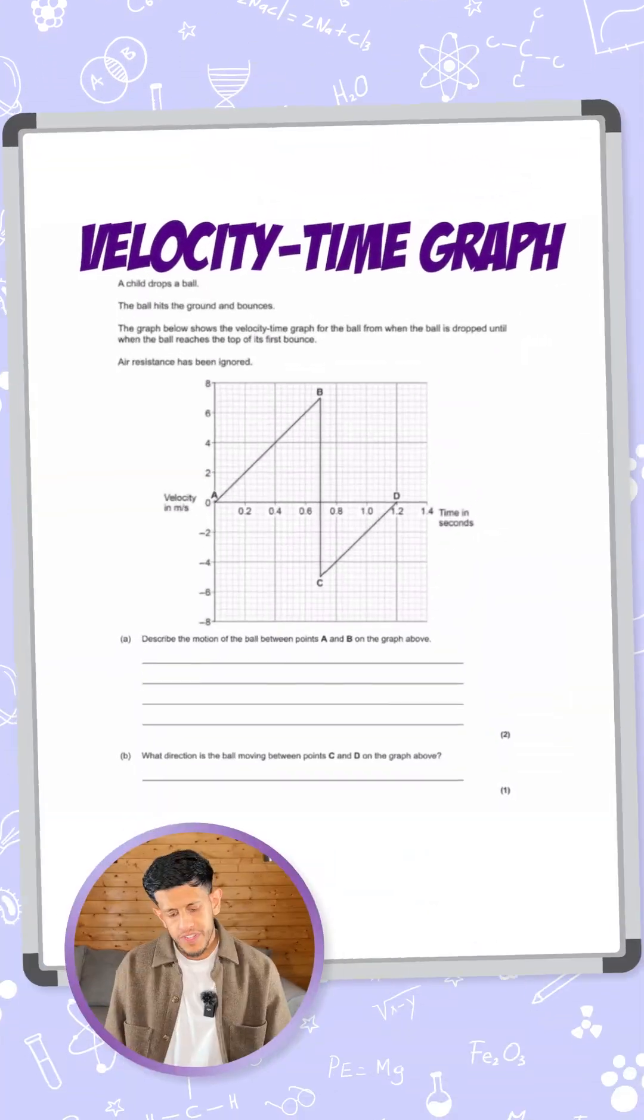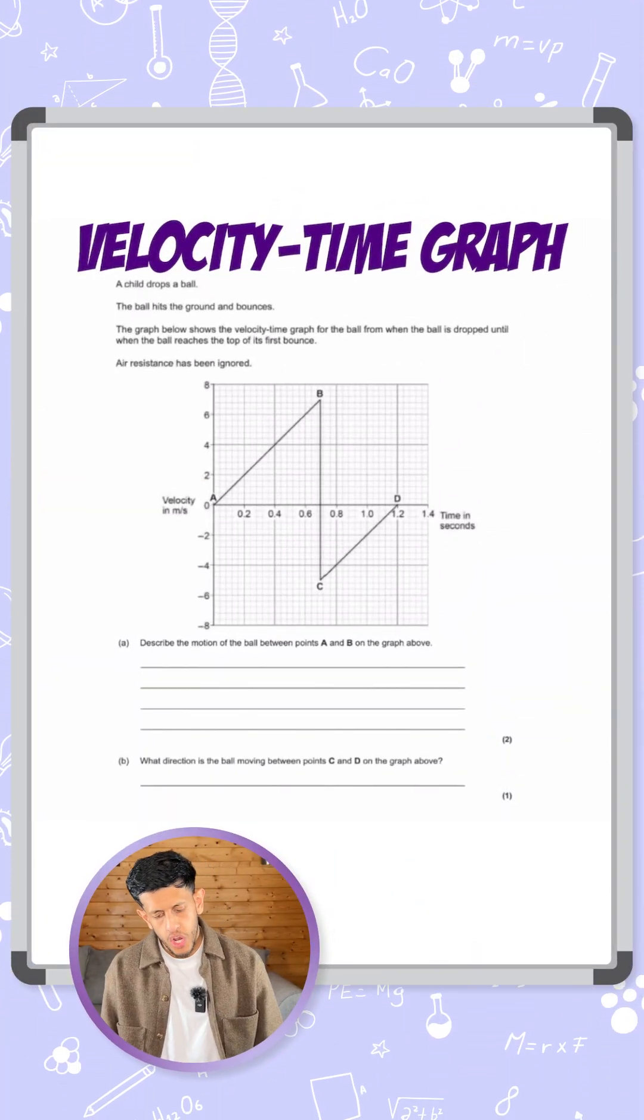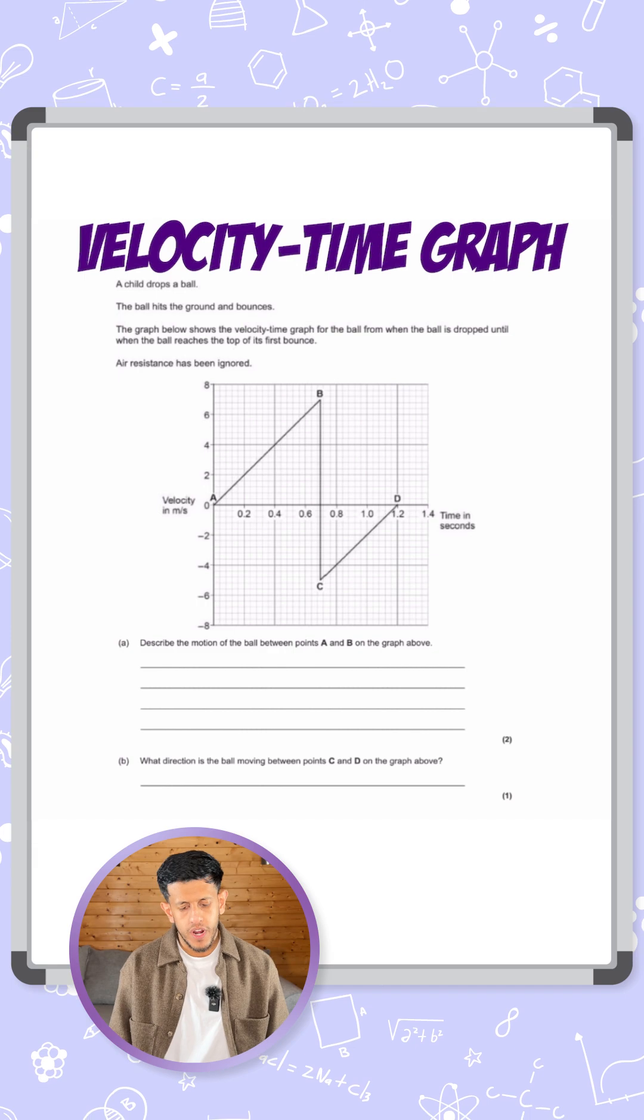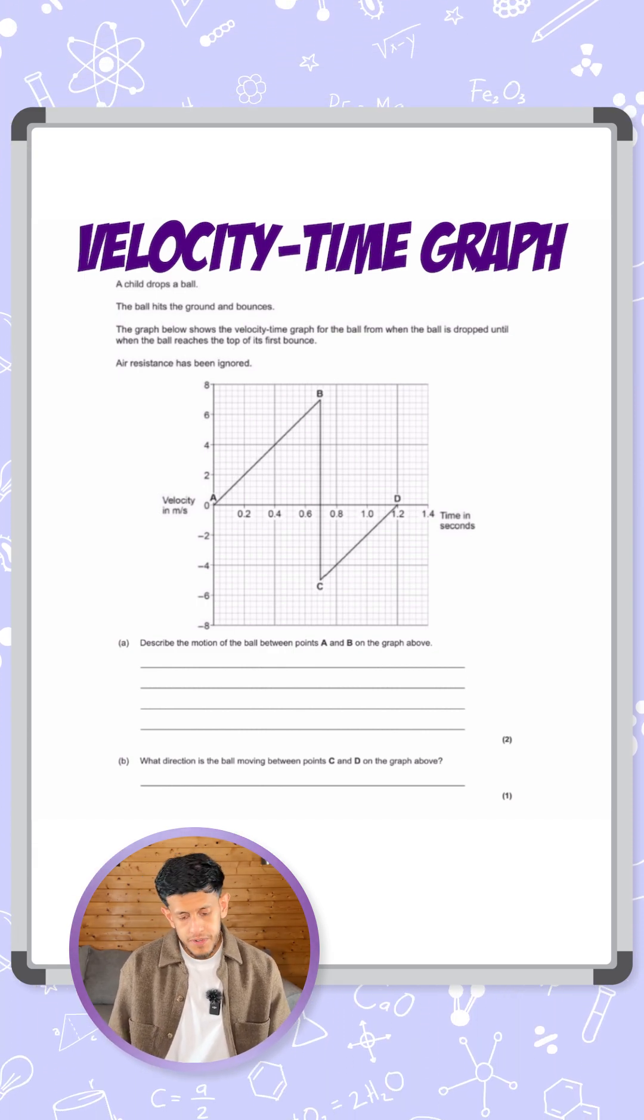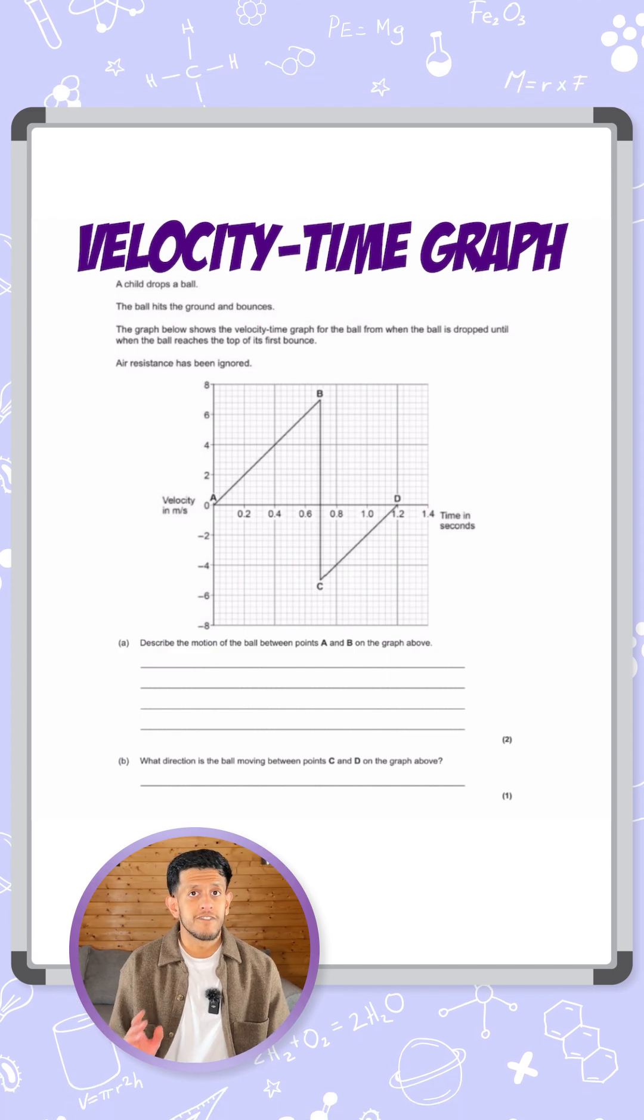Okay, so here we have a question on velocity-time graphs. It says a child drops a ball. The ball hits the ground and bounces. The graph below shows the velocity-time graph for the ball from when the ball is dropped until the ball reaches the top of its first bounce.